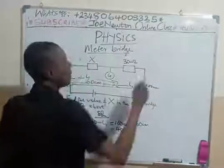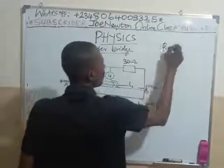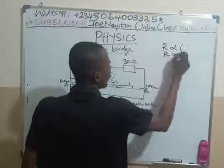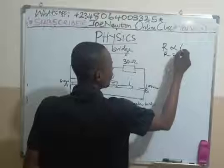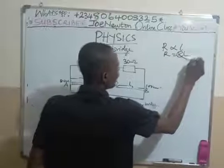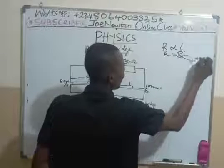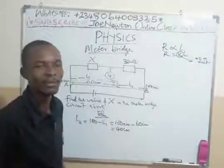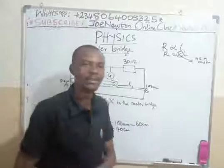Right? So, R is proportional to L, so that R is equal to KL. Of course, this K is a constant, taking it as a unit. As a unit, then we have that R is equal to L, per unit length.